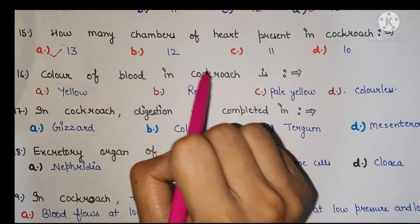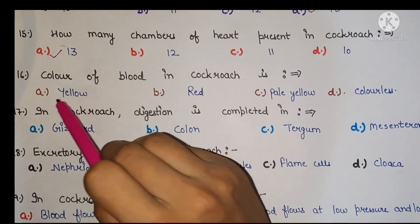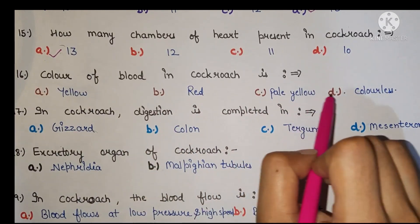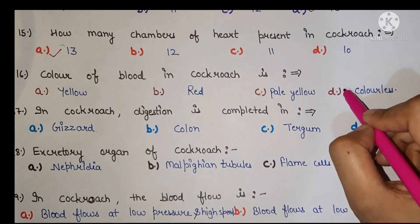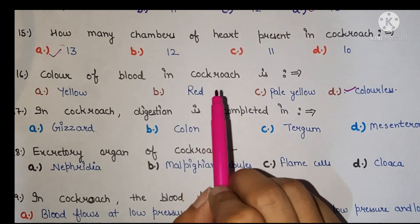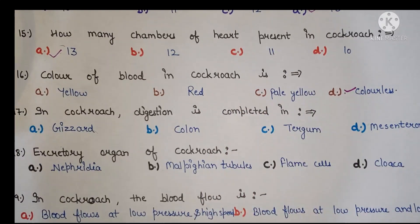Next, color of blood in cockroach is A yellow, B red, C pale yellow, D colorless. Right answer is colorless because hemoglobin is absent in cockroach.